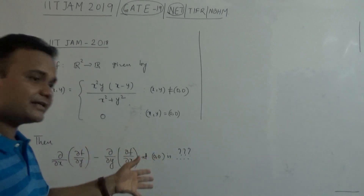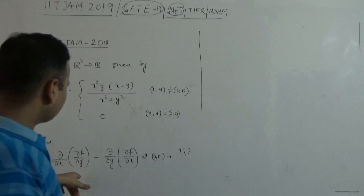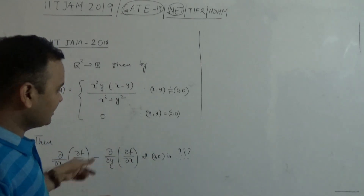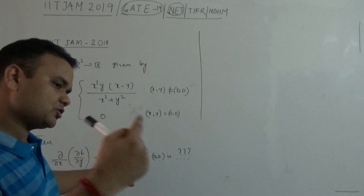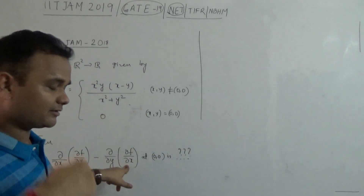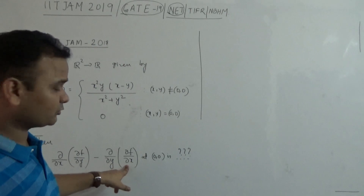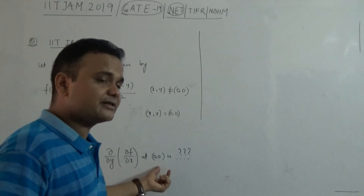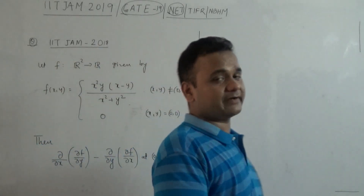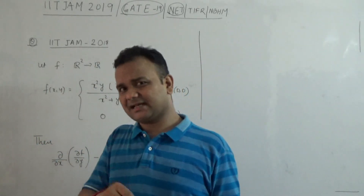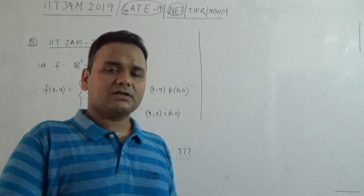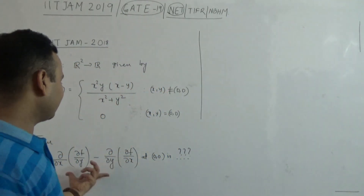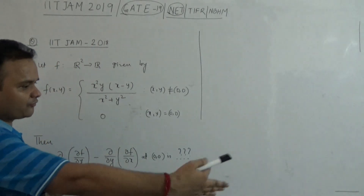What do we mean by the mixed derivative? Mixed derivative is nothing but: first you take the derivative partially with respect to Y, then you take it with respect to X. On the other hand, first you take the partial derivative with respect to X, and then with respect to Y — and we evaluate both at the point zero-zero, because derivative is a local property, so we look around a point.